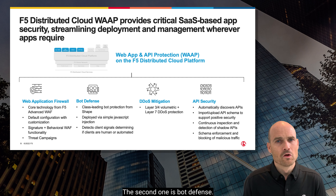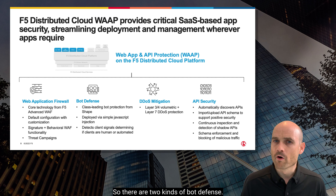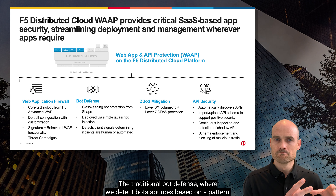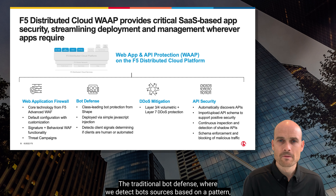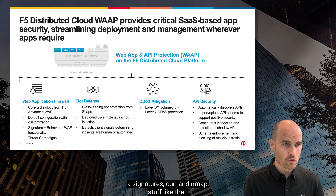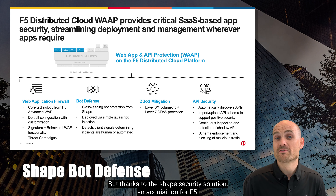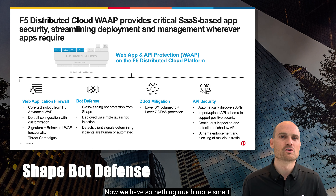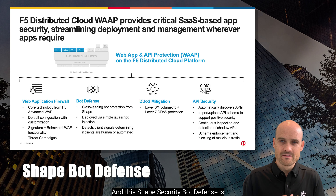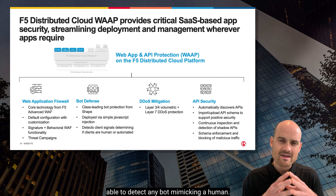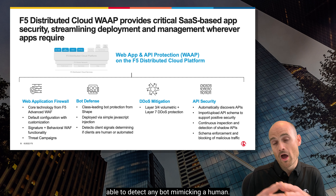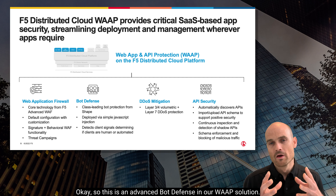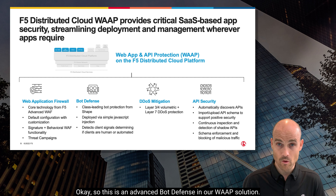The second pillar is bot defense. There are two kinds of bot defense. The traditional bot defense, where we detect bot sources based on a pattern, a signature, curl, nmap, stuff like that. But thanks to the Shape Security solution, an acquisition by F5, now we have something much smarter. This Shape Security bot defense is able to detect any bot mimicking a human. This is advanced bot defense in our WAAP solution.